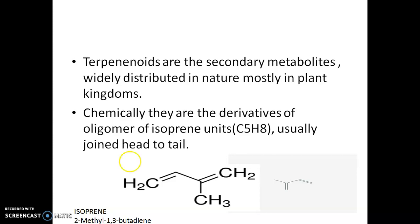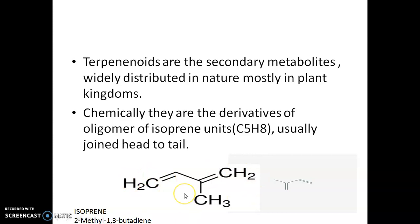Chemically, terpenoids are the derivatives of oligomers of the isoprene unit C5H8. These oligomers generally consist of 2, 3, 4, 5, or 6 units of this isoprene unit. The isoprene unit is none other than the structure C5H8, chemically known as 2-methyl-1,3-butadiene. These are the fundamental units of terpenoids, and sometimes the terms terpene and terpenoid are used simultaneously.